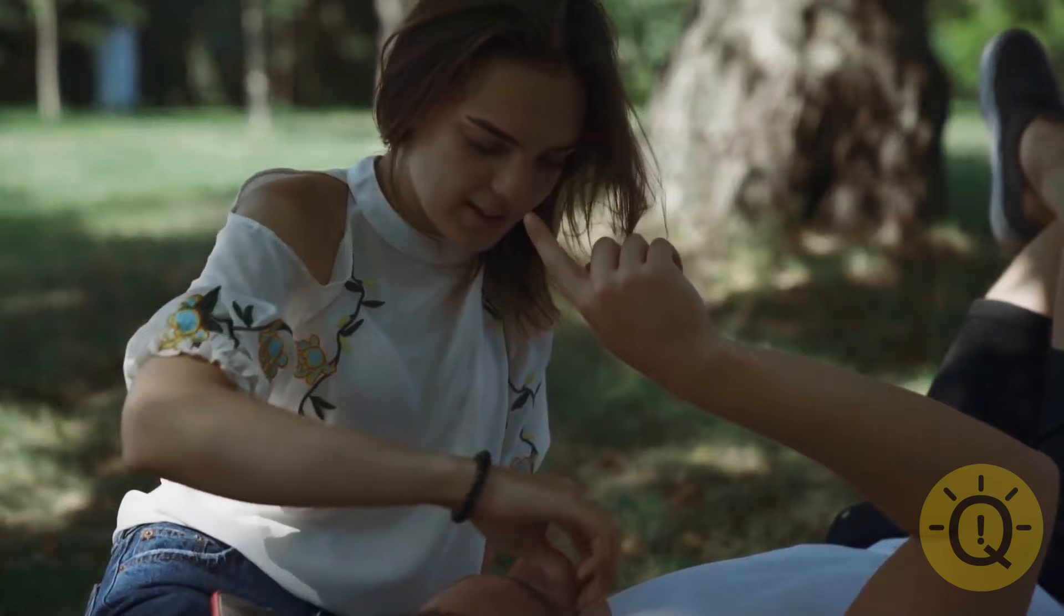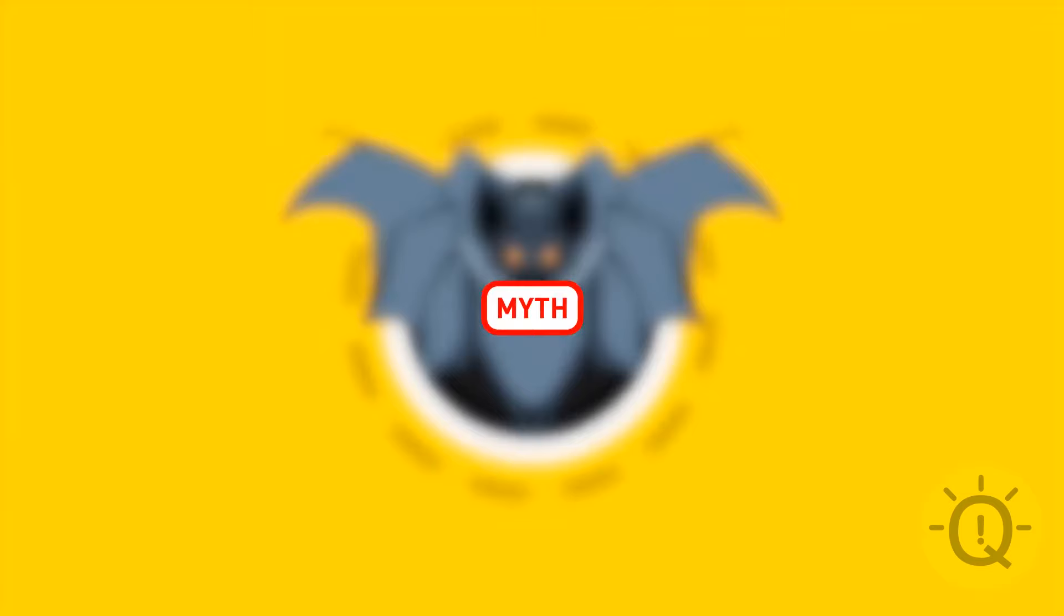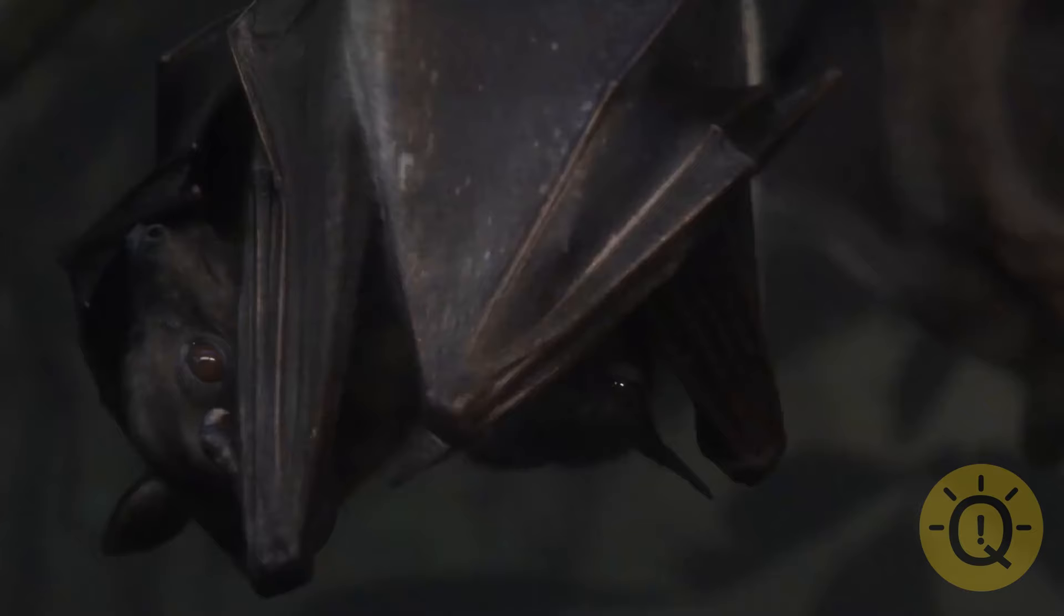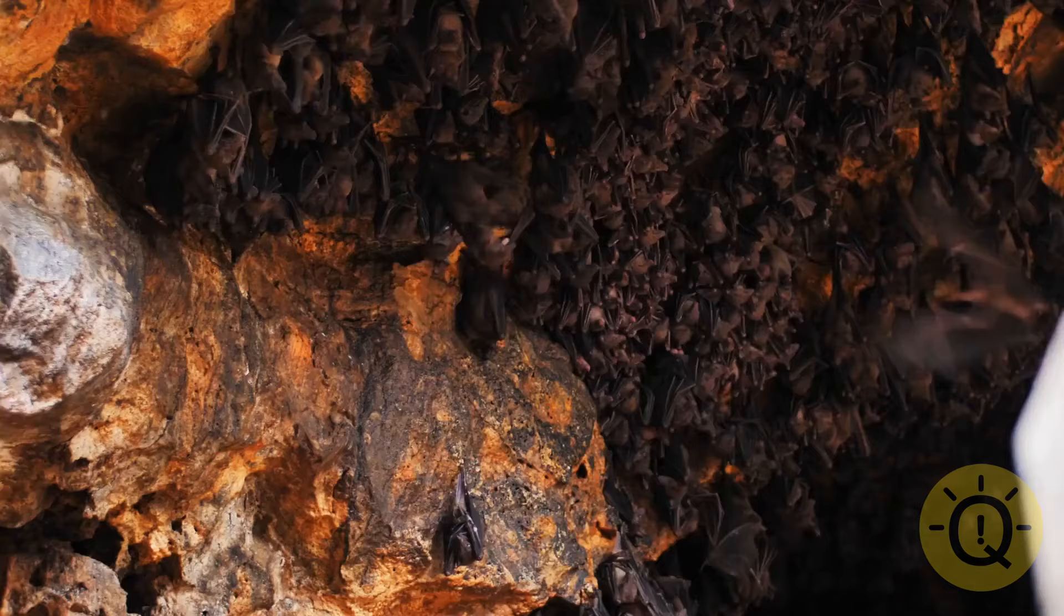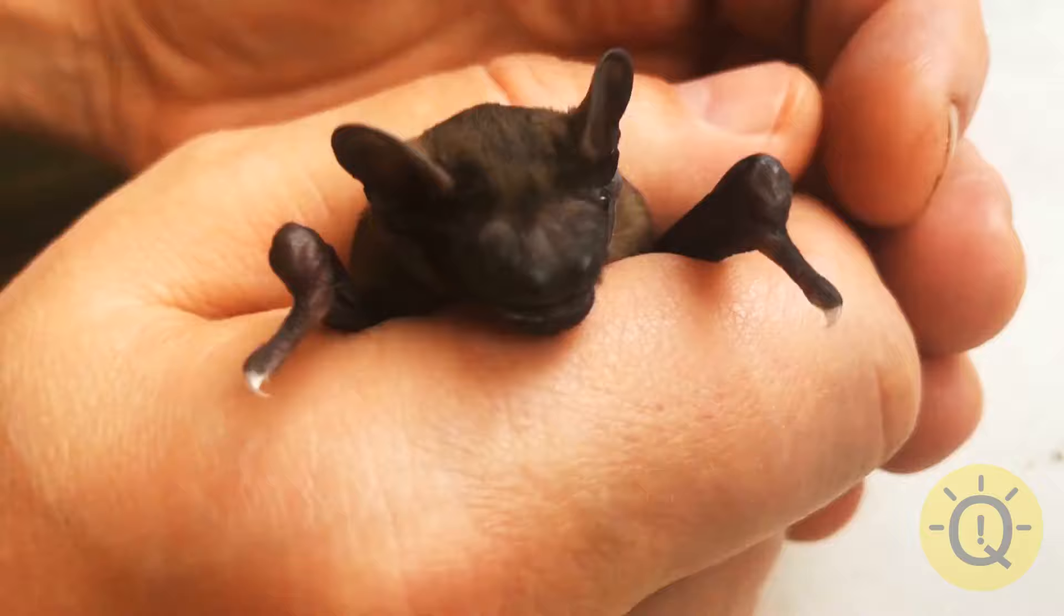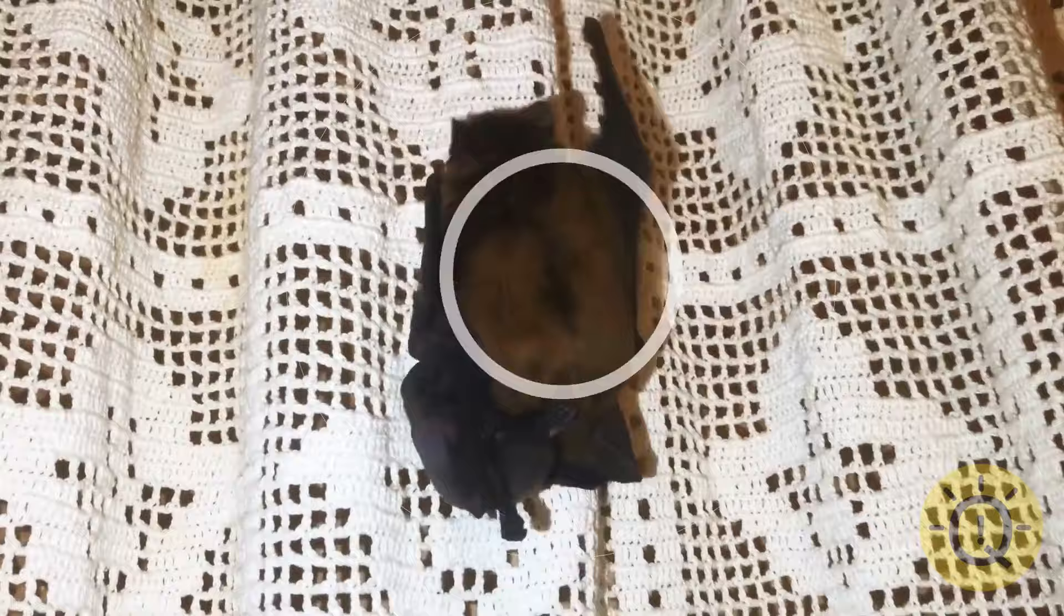Bats are blind. Myth. Bats' eyesight is actually better at nighttime than ours. They just can't see as well in daytime, because they only see in black and white. Perhaps this myth arose from the fact that bats use sonar to navigate without sight.